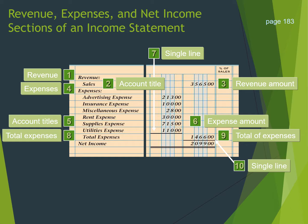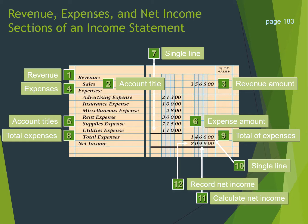We will then draw a single line because we want to find the difference between expenses and revenue to find our net income. We will calculate our net income by subtracting total expenses from our total revenue. We will then write in our net income, and then write 'Net Income' in the first column, followed by double lines across both dollar amount columns. Notice you only double rule the dollar amount columns.